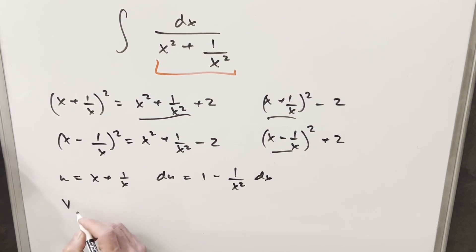And then really similar, let's just use another variable. Let's say v is going to be this piece. So if I do like a v substitution for x minus 1 over x, when I take my derivative, we end up with 1 plus, just changes to the sign, 1 over x squared dx.